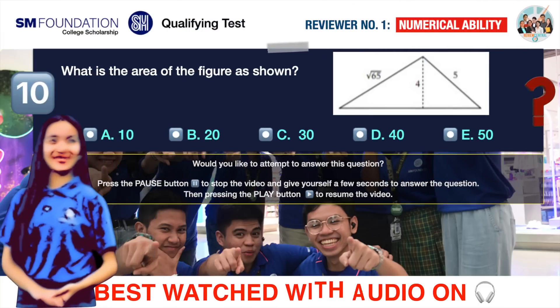Question number 10. What is the area of the figure as shown? A. 10 square units, B. 20 square units, C. 30 square units, D. 40 square units, E. 50 square units.